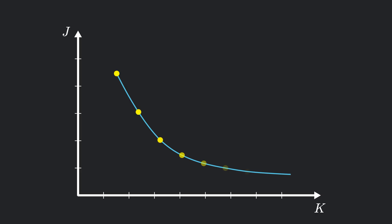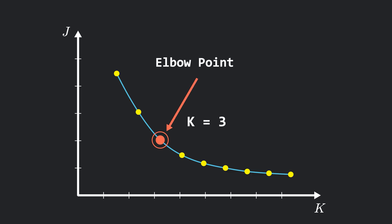In the elbow method, we run k-means for multiple values of k, and for each case we calculate the cost function J. Then we plot the value of k against the cost. We don't simply pick the k where the cost is the smallest, because the cost always decreases as k increases. Instead, we look for the elbow point — the point on the graph after which the cost is no longer reduced significantly and the improvement becomes marginal. In this example, k=3 looks like a good choice, although k=4 is also acceptable.